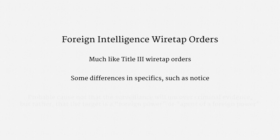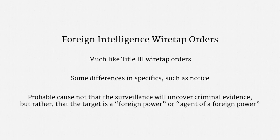Recall that to get a wiretap order, law enforcement agencies had to demonstrate probable cause that there would be evidence of a crime. Foreign intelligence investigations, of course, often don't involve criminal activity. So FISA switched what probable cause applies to. The government needs to show probable cause that the target is a foreign power or an agent of a foreign power — that includes other nations' governments as well as terrorist groups.